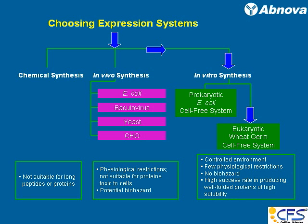When you look at the whole expression systems available, if you're looking at small peptides, you may want to chemically synthesize those peptides. But as the peptides get bigger, chemical synthesis is not the way to go. So you have to rely on in vivo synthesis using cells like E. coli, bacteria, virus, yeast, and Chinese hamster. All these in vivo systems have existed a long time and have contributed to the biological and biomedical area.